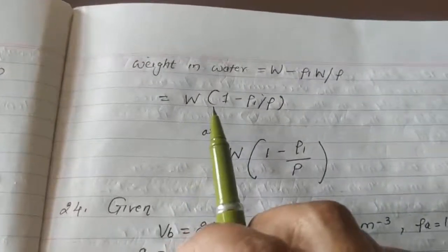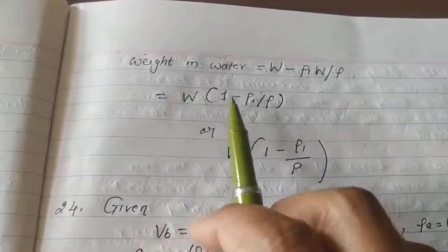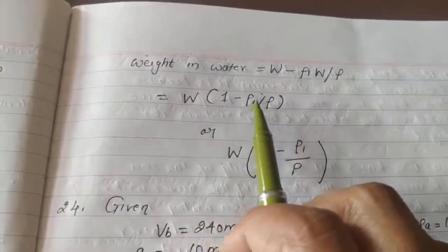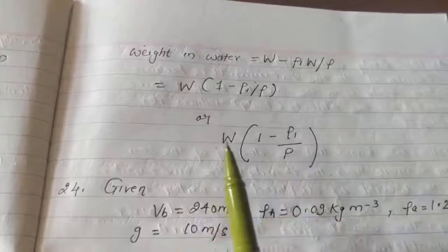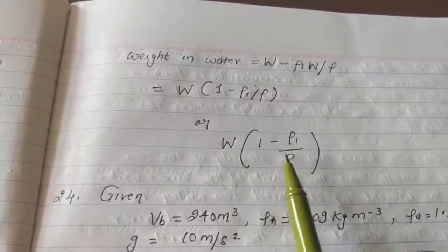W is equal to, or is equal to W, under bracket, 1 minus rho l divided by rho, and W is equal to 1 minus rho l upon rho.